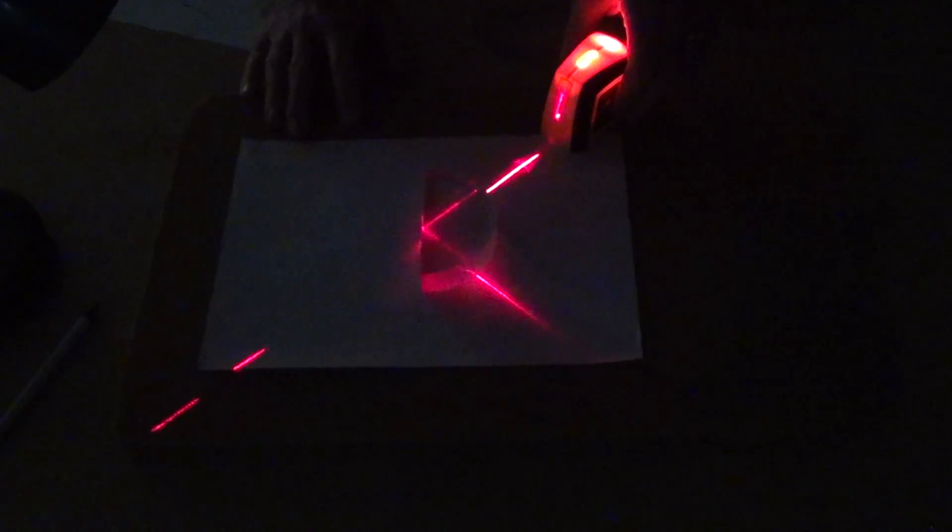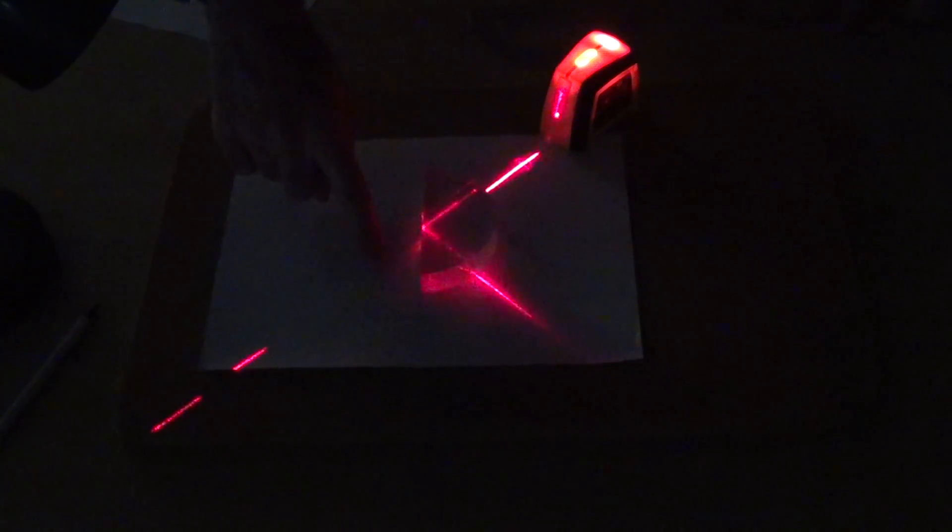But when I reach a certain point, I'm no longer seeing a refracted beam here. Instead, I'm getting just a reflected beam.